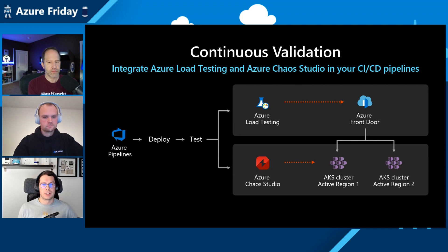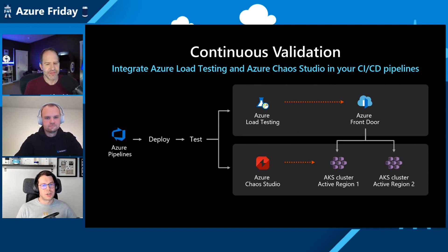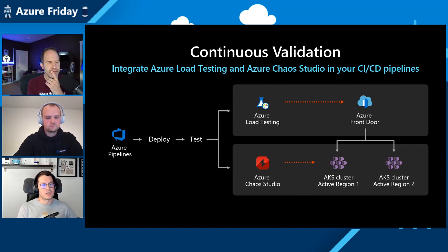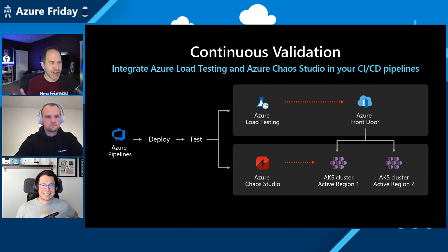Instead of doing it manually — and that's actually a fun exercise — we once randomly destroyed infrastructure pieces in Azure and observed how the application reacted. It was great because it helped us understand that a piece was not resilient, or a database connection was not retrying properly. But Chaos Studio allows us to automate all of that, using a service to do it automatically every time we deploy or every time we do a major change. Can I see a demo? Absolutely, let's do it.